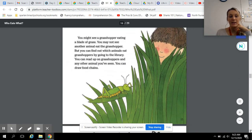You might see a grasshopper eating a blade of grass. You may not see another animal eat the grasshopper. But you can find out which animals eat grasshoppers by going to the library. You can read up on grasshoppers and any other animal you've seen. You can draw food chains.